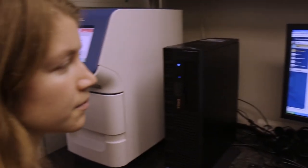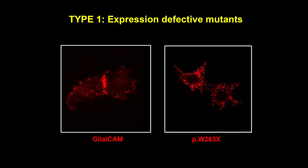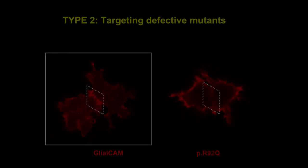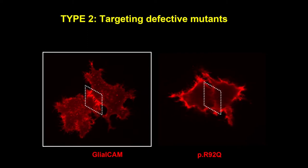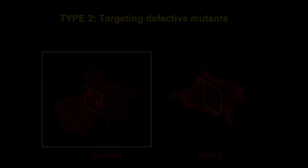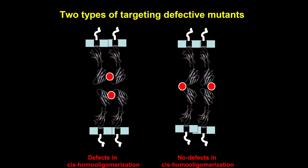Some mutations affect GLIALCAM protein expression and its arrival to the plasma membrane. Most mutations reduce its localization at cell-cell junctions. In this work we have found two different mechanisms that lead to this defect in targeting: some mutants affect its ability to homo-oligomerize, and others may affect trans-homophilic interactions.